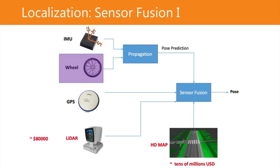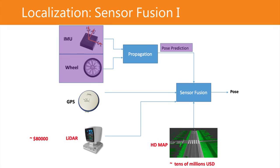First, you have the wheel odometry of the car to tell you how much distance you have traveled. You then combine the wheel odometry and IMU. The IMU device provides angular acceleration and angular velocity, so using this sensor you can derive the angle of the turn of the car. If you combine that with the wheel odometry information, you can derive very accurate position information. We call that pipeline propagation — you combine wheel odometry and IMU to derive the initial position.